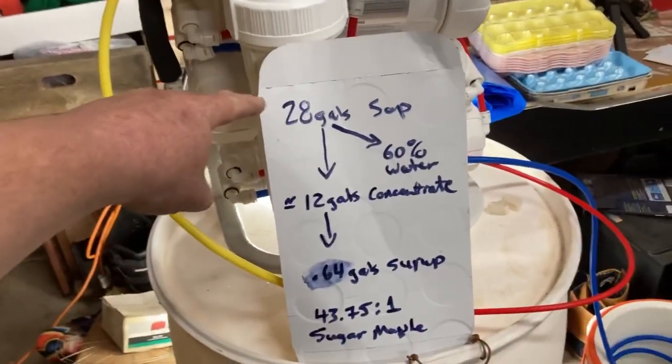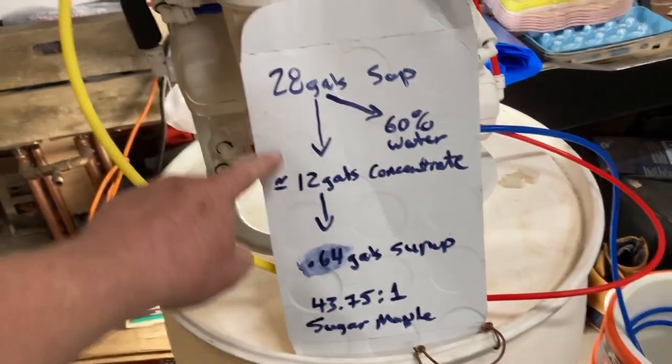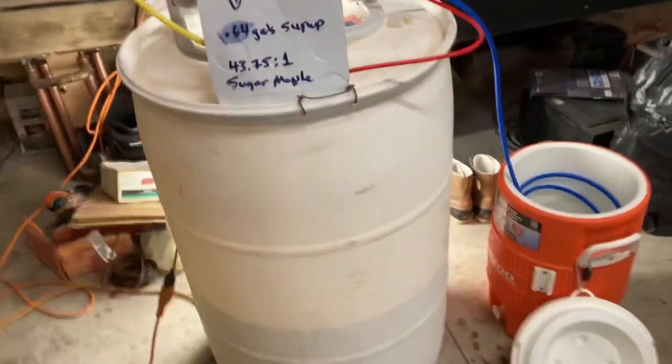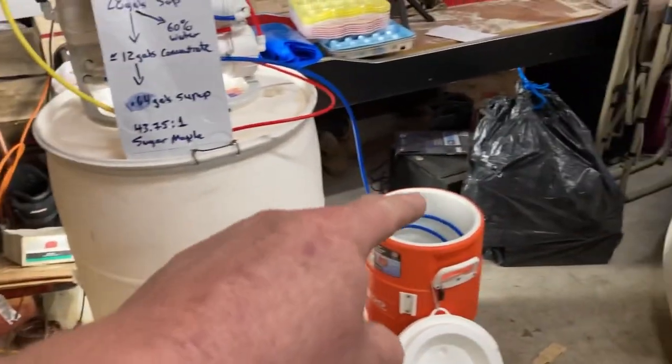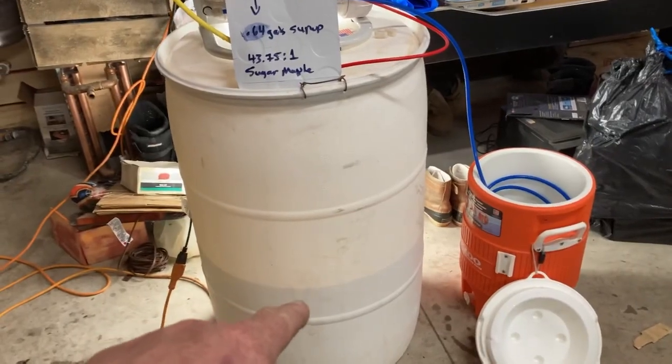So we start out with 28 gallons. We know we're going to do 60% out, so 40% of 28 is approximately 12 gallons. So you can either do that by measuring how much water you take out, or you can do it by how much sap is left.